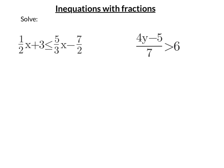So for this first one here, what I'm going to do is get rid of all the denominators — get rid of all these fractions. The lowest common multiple of the denominators 2, 3, and 2 is 6. So I'm going to multiply all the terms by 6. So 6 times 5 thirds X minus 6 times 7 over 2.